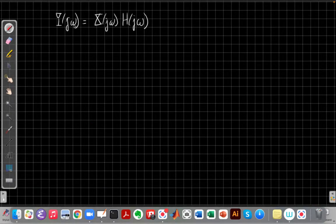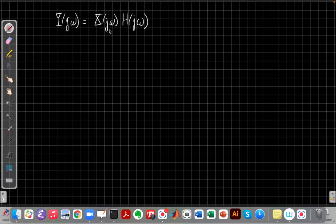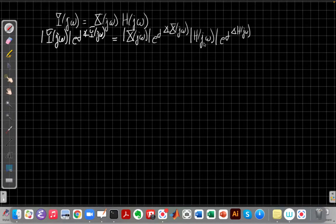So I've got, again, my output Fourier transform is the input Fourier transform times the frequency response. And now let me write all three of these out in polar form. So for each of these functions, I have the magnitude of y times e to the j phase of the output. I've written x and h in polar forms.